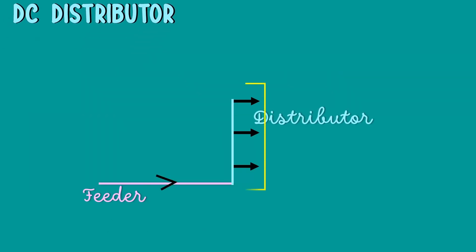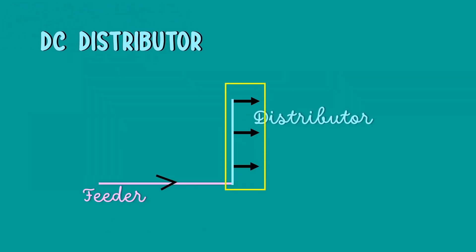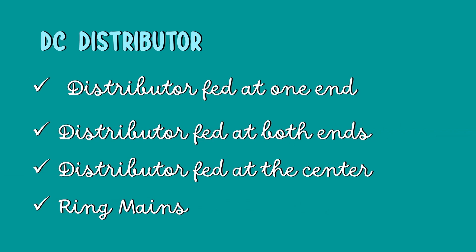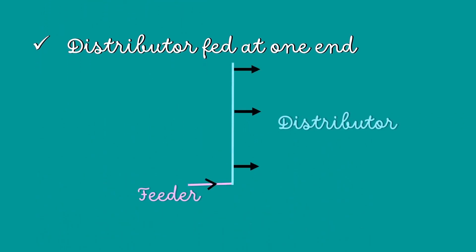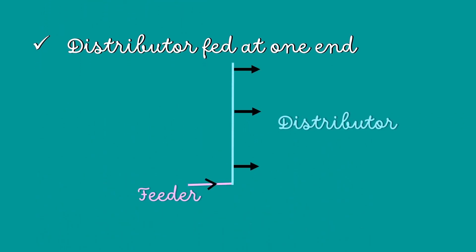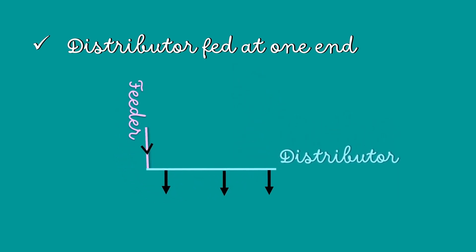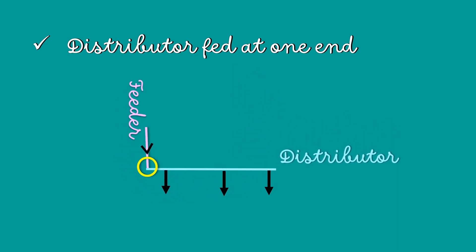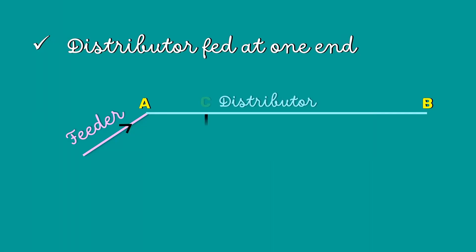The DC distributors are classified into four types. The first one is the distributor fed at one end. In this type, the distributor is connected to the supply at one end only. The loads are taken at different points along the length of the distributor.